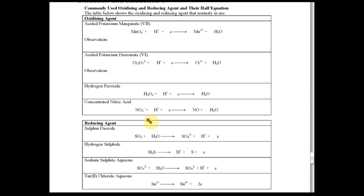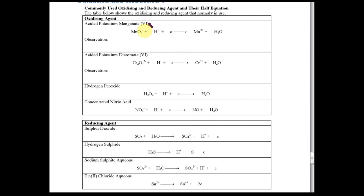Other than memorizing the oxidizing and reducing agents, you also need to know how to write and balance half equations. All the equations shown here are half equations. How do you tell it's a half equation? When you see electrons in the equation, it's a half equation. You need to know how to write and balance these half equations.